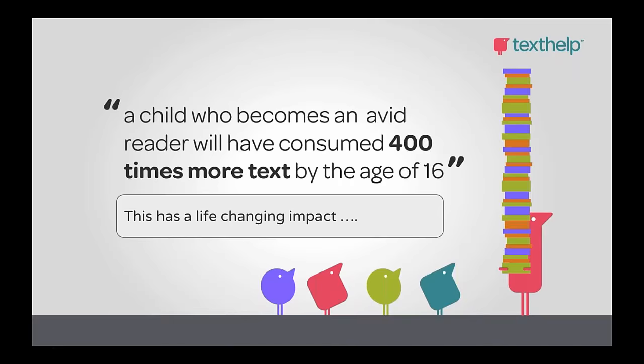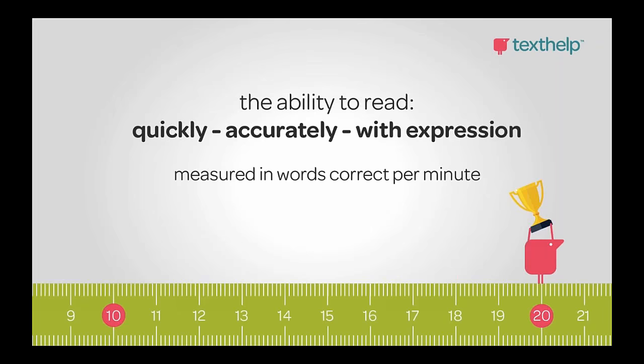Technology can help foster avid reading. For a student to be an avid reader, they first need to be a fluent reader. Fluency is the ability for an individual to read quickly, accurately, and with expression. The standard we usually measure this with is words correct per minute — if a student reads aloud for one minute, we count mispronunciations and omissions to calculate their words correct per minute, and there are norms associated with this.